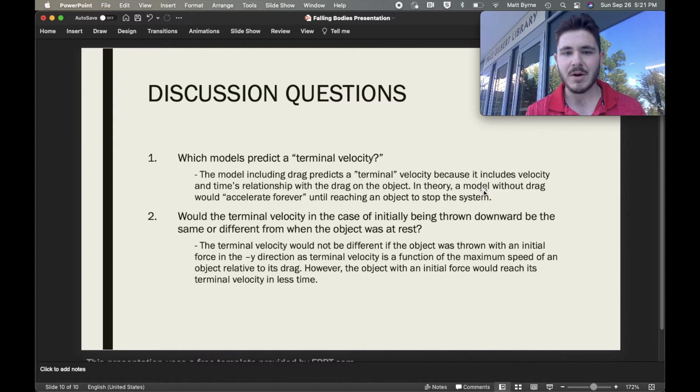For the terminal velocity, the best model is the one that includes drag because it shows how fast an object truly can go relative to the drag placed on it. An object such as a rock is going to accelerate in theory until it hits an object that's going to stop it, such as the ground. But an object that has a drag force on it will create terminal velocity—that's the definition of terminal velocity.